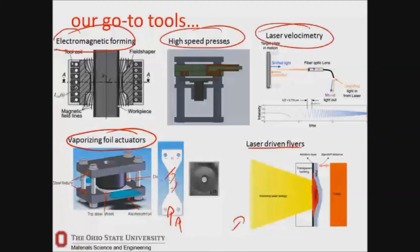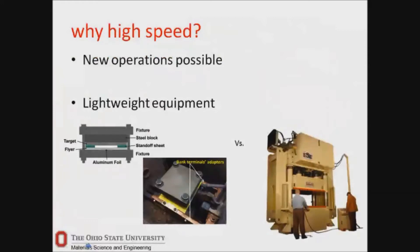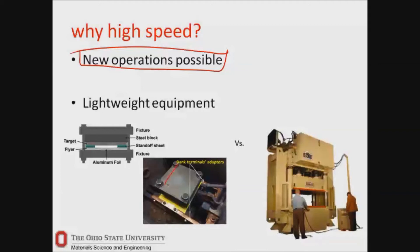It's important that we measure the speeds, and laser velocimetry gives us the tools to do that. The big question is why do we use high-speed processes? Two key reasons: new operations are basically possible, and the equipment can be very light. Once you have a capacitor bank about the size of a washing machine or freezer, you can hook that up to something very small and develop very high pressures on the order of a gigapascal over a region — giving you the same sort of forces you might get from a many-hundred-ton press. So we can really reduce the footprint of the equipment.